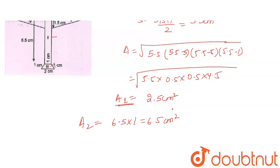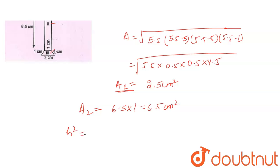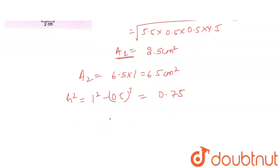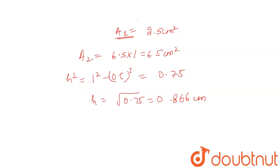Now let's look at the third one. What is the third one? Trapezium. If I take the height here, how can I take the height? 1 squared minus 0.5 squared. The height is 0.75, so height is equal to under root of 0.75, that is approximately 0.866. So area of third is half into sum of parallel sides, that is 1 plus 2 into 0.866, giving 1.3 cm².